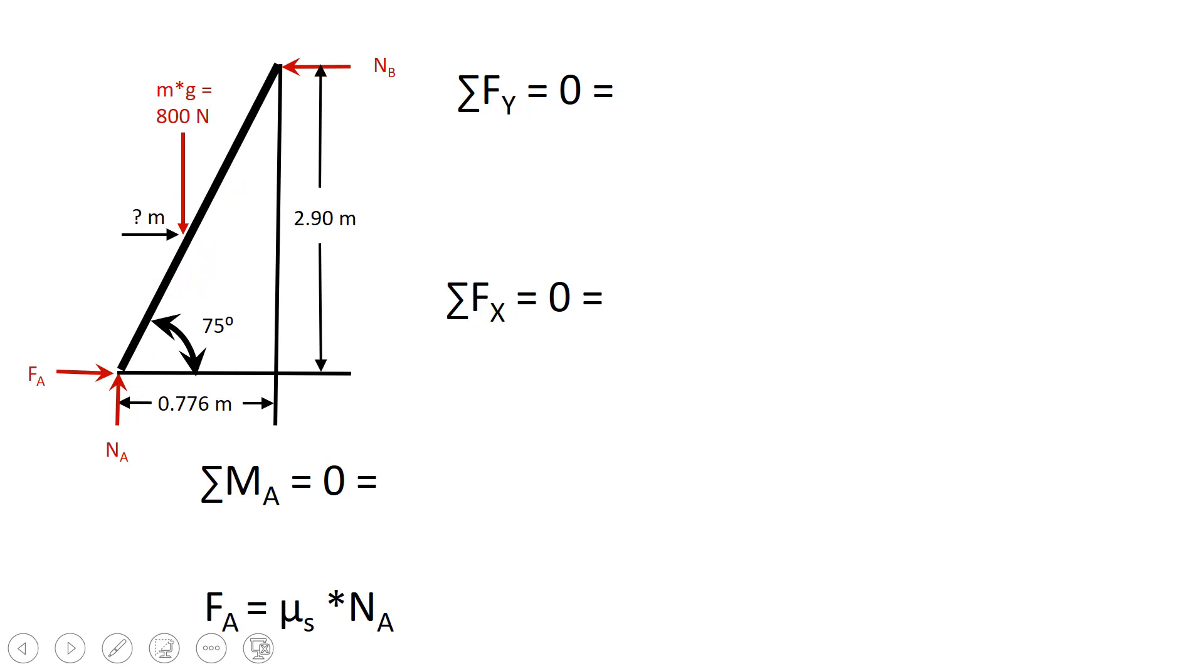And once I find that D, then I can calculate the distance up the ladder that way. So let's work through our equations of equilibrium. The sum of the forces in the y direction have to be equal to zero. So my positive force here, the reaction force at the base, Na, minus the force due to the person's weight, minus 800 newtons, is equal to zero. And I can calculate that Na equals 800 newtons.